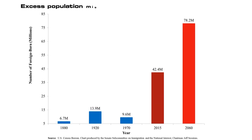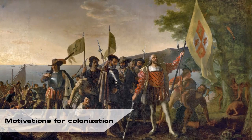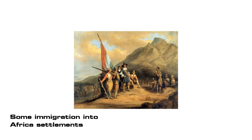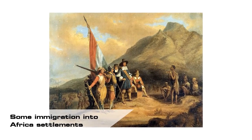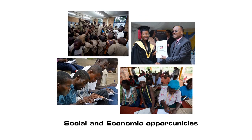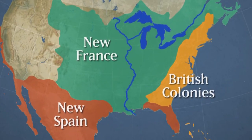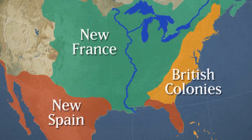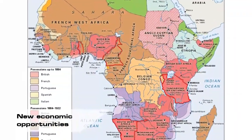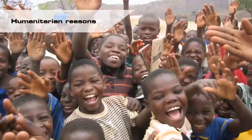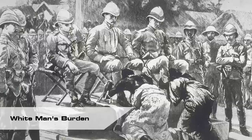For the British, controlling trade was about dominating the global economy. Six: excess population migration. While not one of the main motivations for colonization, this does account for some immigration into African settlements, which ties into the next motivation. Seven: social and economic opportunities. Much like the original settlers who came to the new British colonies in North America, some traveled to Africa to make new economic opportunities out of the wealth in natural resources and raw materials.